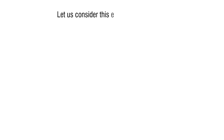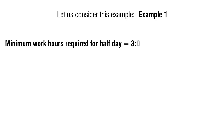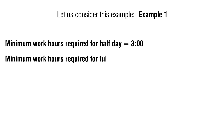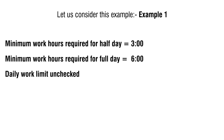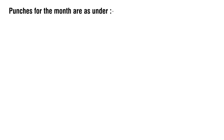Let's consider this example. Minimum work hours required for half day is 3. Minimum work hours required for full day is 6. Daily work limit is unchecked. Monthly target is 60 hours. Punches for the month are as under.